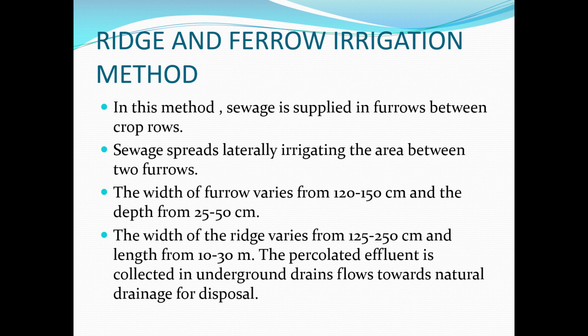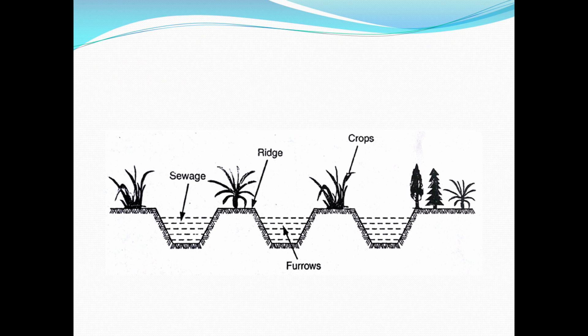Ridge and furrow irrigation is similar to what we saw with dikes, but here the furrows are much deeper so they directly affect the roots. The ridges have the plants on them and the furrows contain the sewage. Through the capillary effect, sewage nutrients pass directly to the roots and improve plant growth. The width of the furrows varies from 120 to 150 cm, the depth should not be more than 20 to 50 cm, and the width of the ridges is similar to the furrows but the length is 10 to 30 meters. The remaining effluent is used for tillage disposal.